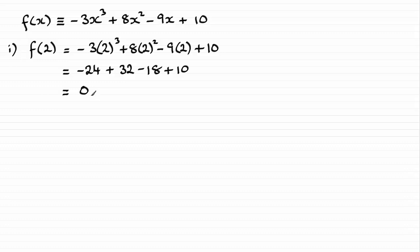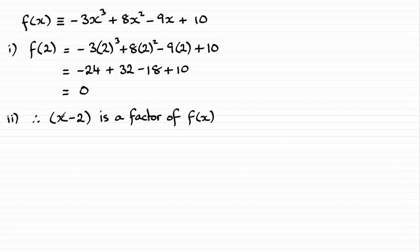That result is expected because it leads us nicely into the next part. By the factor theorem, if you've got a particular value of x — in this case 2 — that makes f of x equal zero, that tells us that x minus 2 must be a factor. If you're unsure of the factor theorem, do go back and check that idea out. So for part 2, we know that x minus 2 must be a factor of f of x.